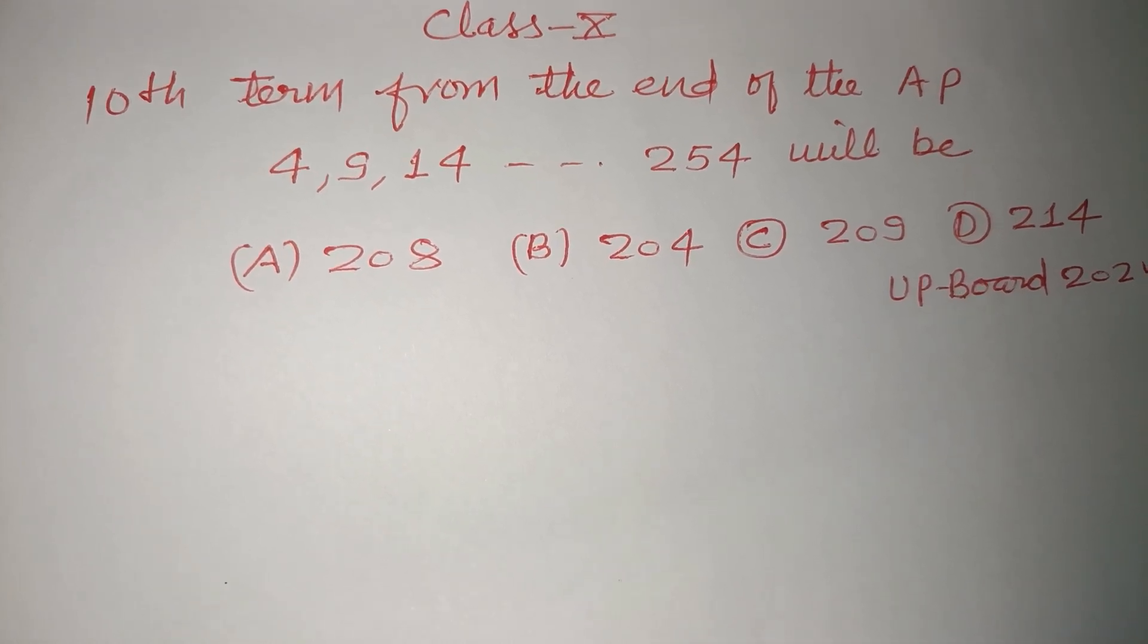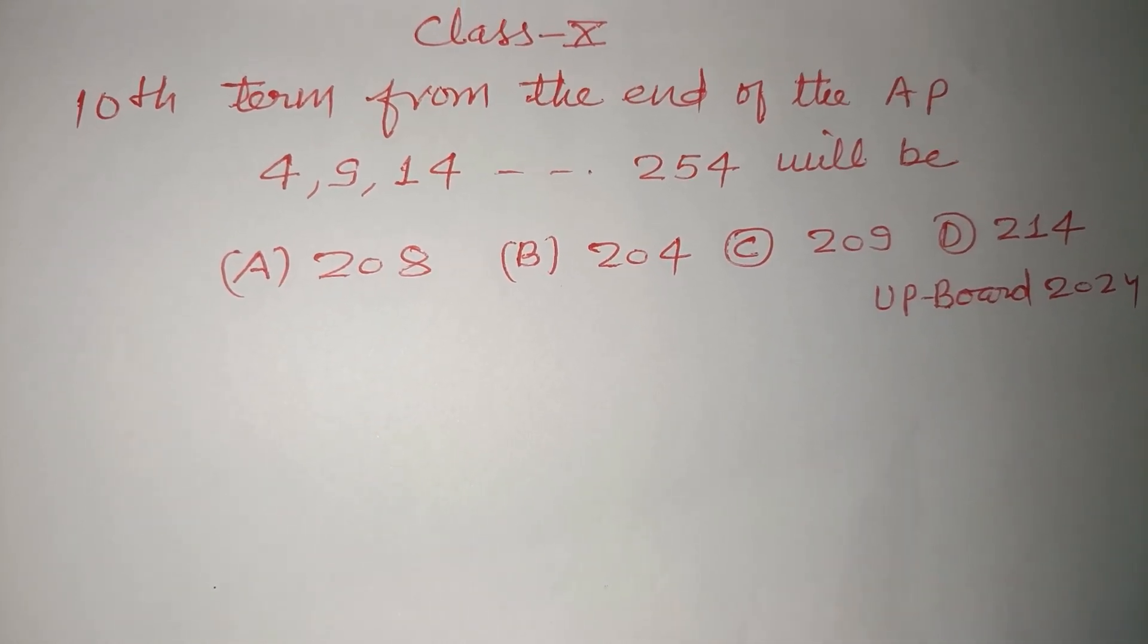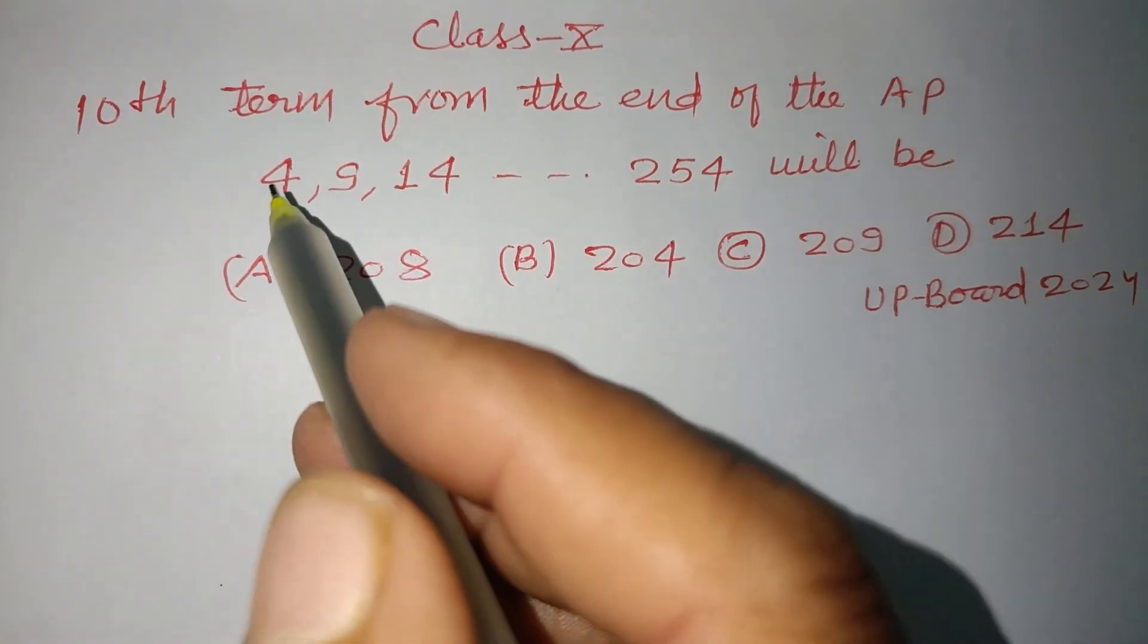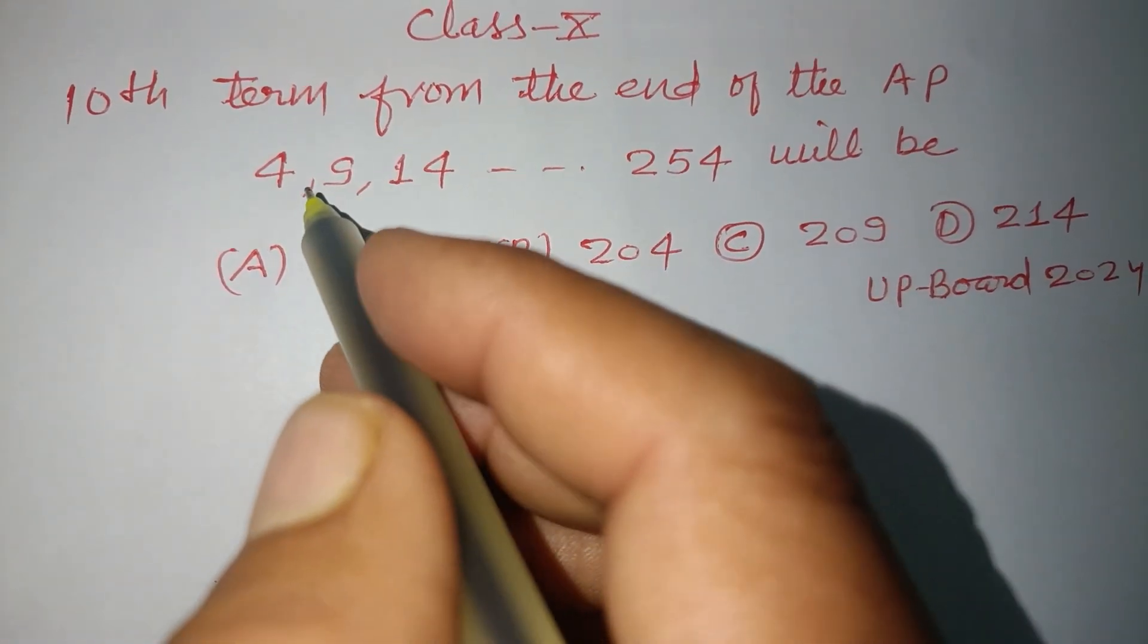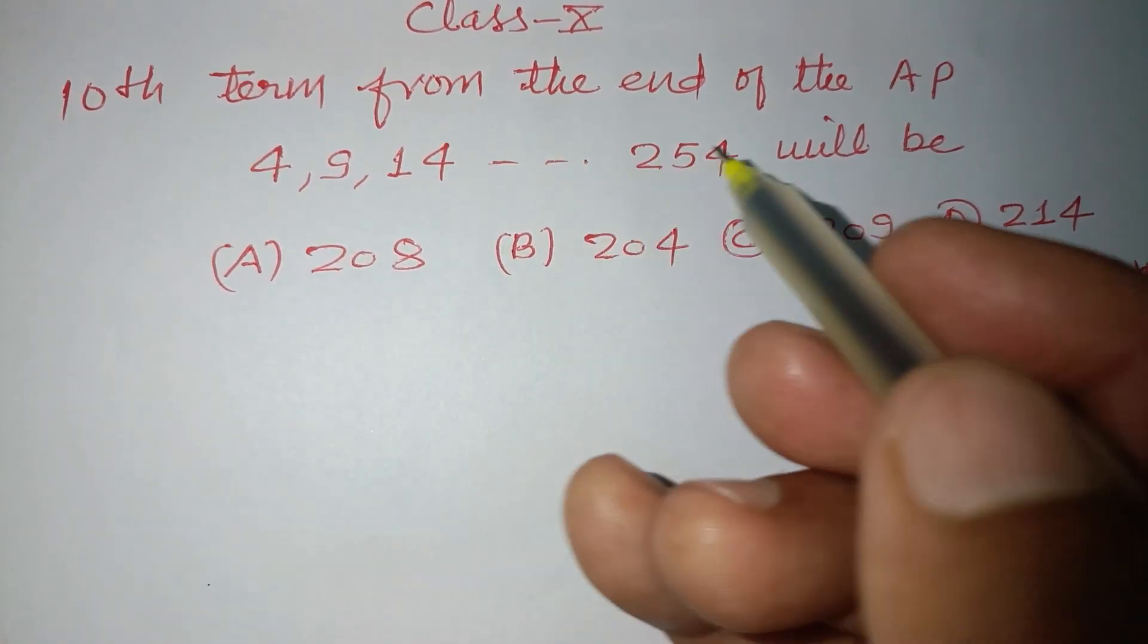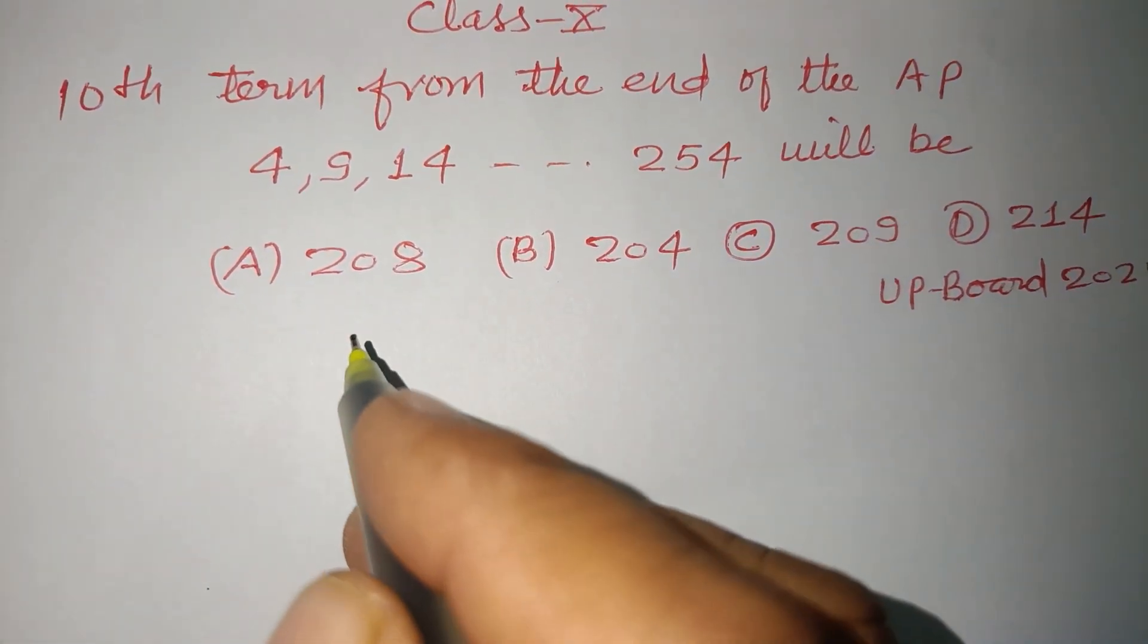Hello viewers, welcome to this YouTube channel. This is a question from UP Board Exam 2024. The 10th term from the end of the AP is given: 4, 9, 14, up to 254.